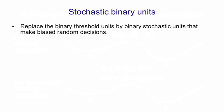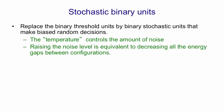The way we get noise into a Hopfield net is to replace the binary threshold units by binary stochastic units that make biased random decisions. The amount of noise is controlled by something called temperature. Raising the noise level is equivalent to decreasing all the energy gaps between configurations.